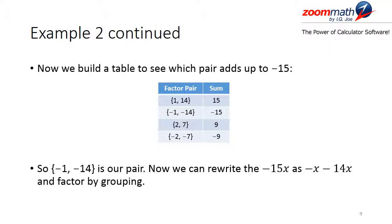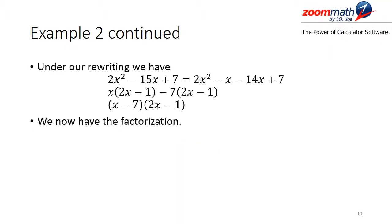We rewrite the negative 15x as negative x minus 14x and factor by grouping. So 2x squared minus 15x plus 7 equals 2x squared minus x minus 14x plus 7. From the first two terms, we factor out x, leaving (2x minus 1). From the last two terms, we factor out negative 7, also leaving (2x minus 1). Since both share (2x minus 1) as a factor, we factor that out, giving us (x minus 7)(2x minus 1).